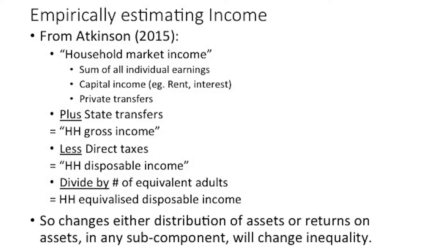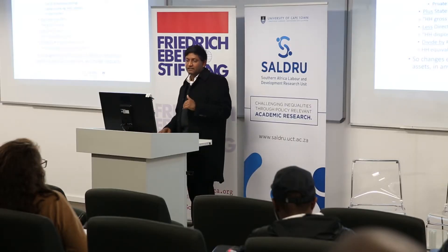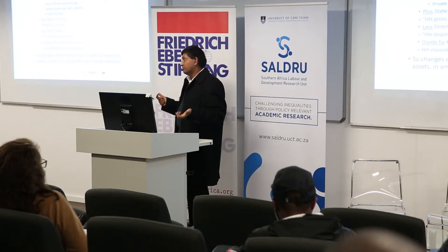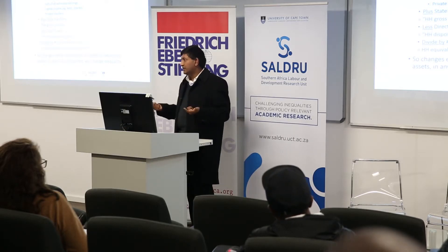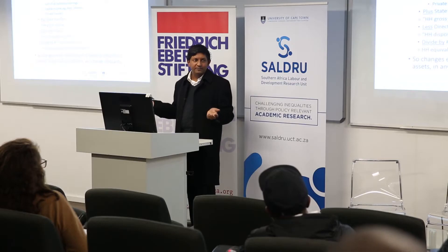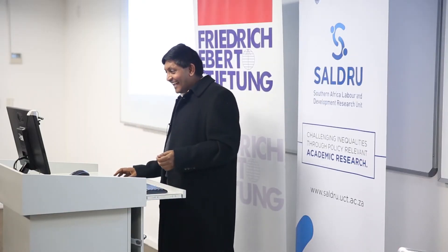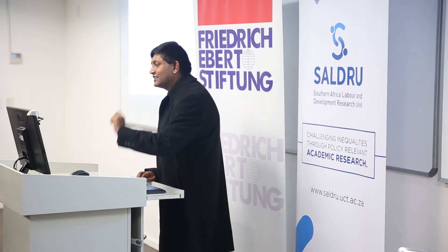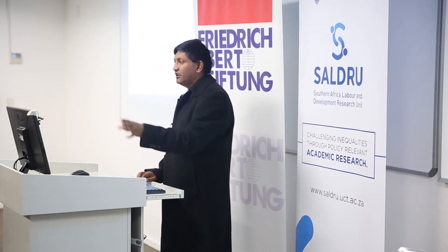Basically any of these components could cause a change in inequality. A change in the labour market leads to a change in individual earnings, which changes household earnings. A change in government taxation rates changes disposable income. Even Cape Town's property market — where rents have shot up dramatically in the last five years — changes costs for renters but also effectively changes your imputed rent for all homeowners, even though you're just living in the same house. The point is that if you want to target your end point, you've got to think in this framework: where are you planning to have an impact?